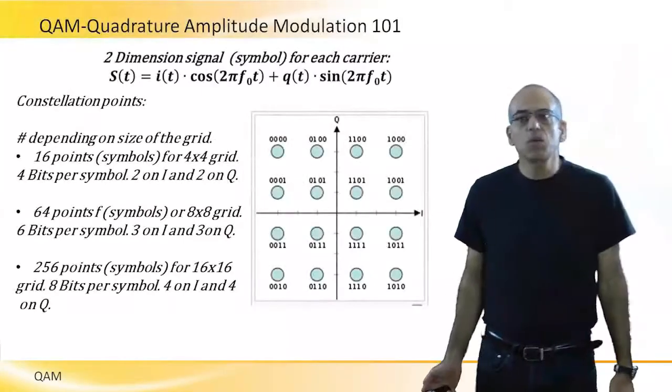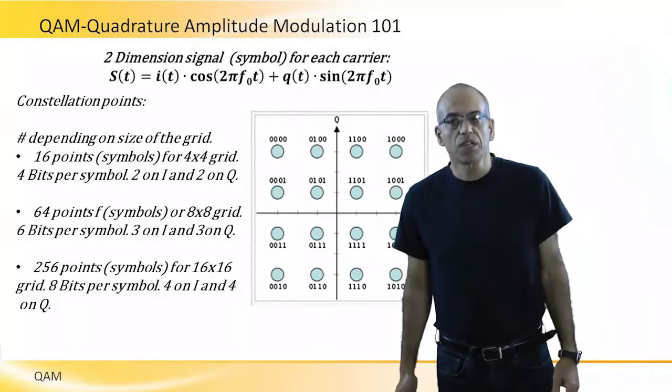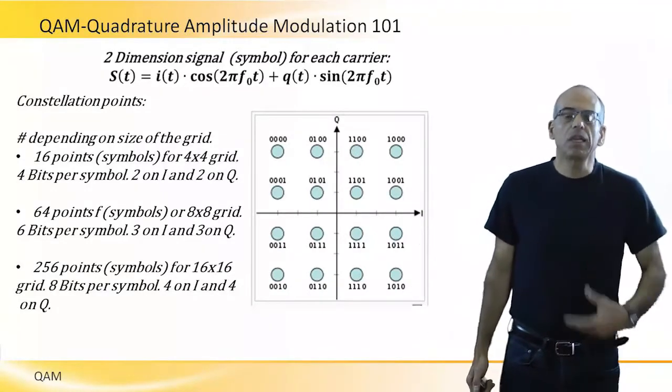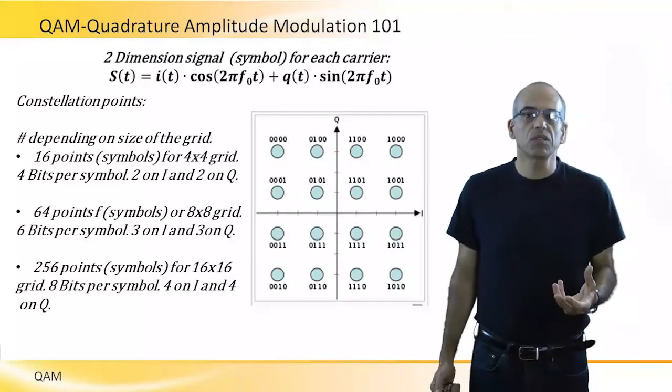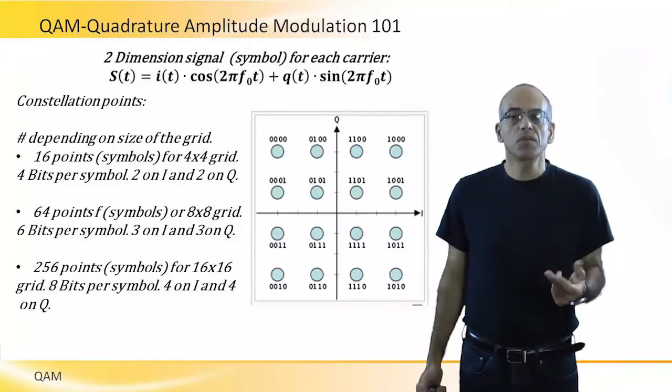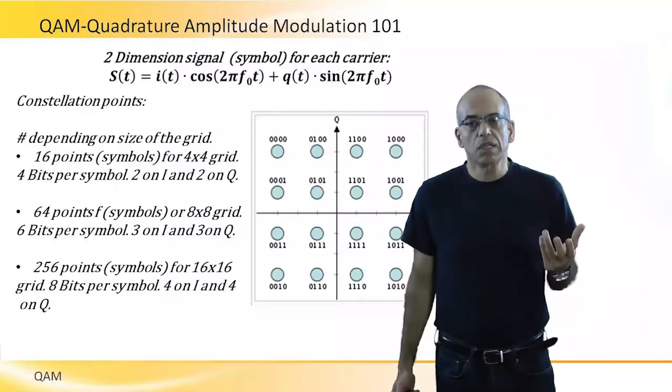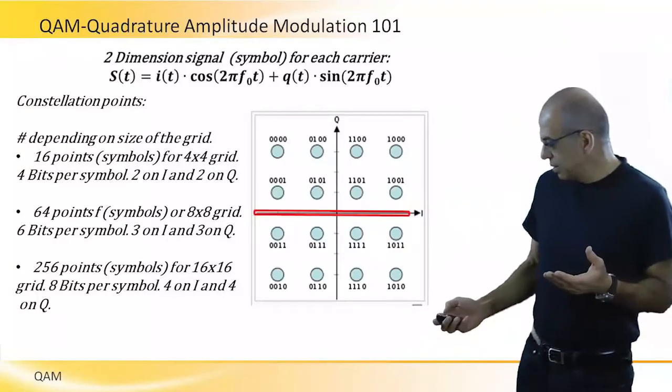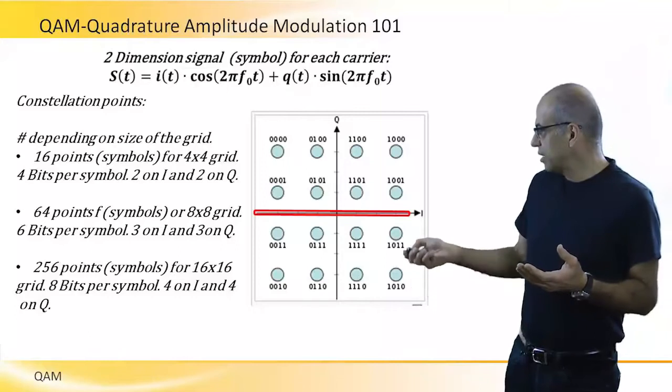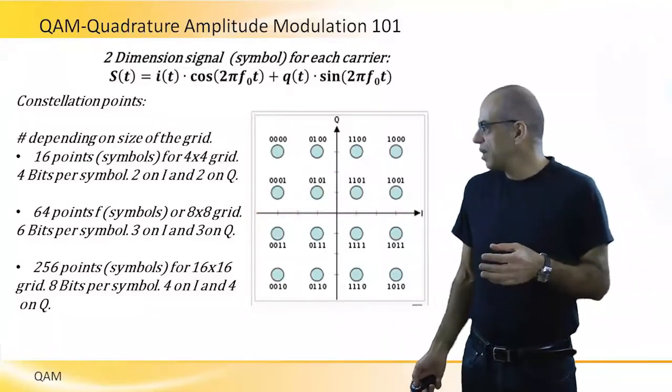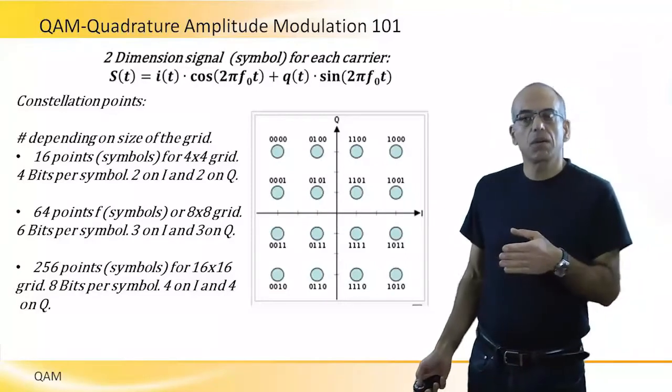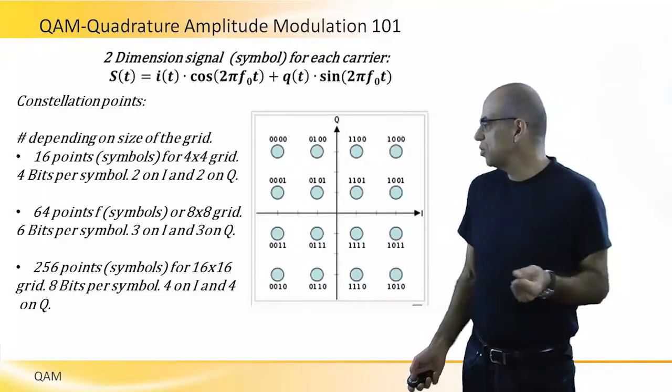QAM is quadrature amplitude modulation. In this modulation we create signals that are two-dimensional. When we speak about two dimensions, they have an I dimension and a Q dimension. The signal can be either single carrier or multiple carriers.